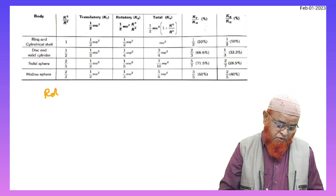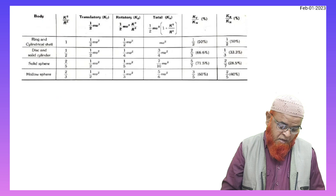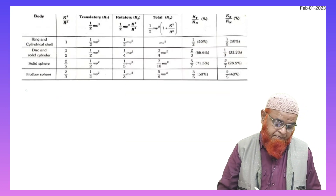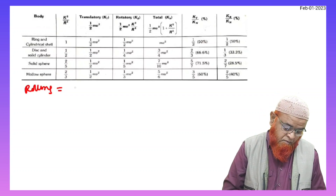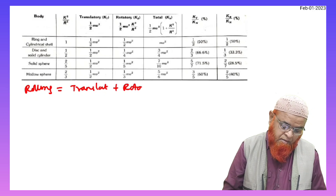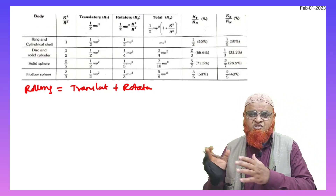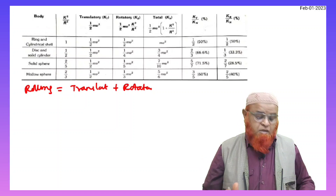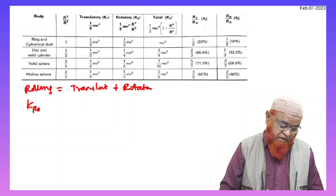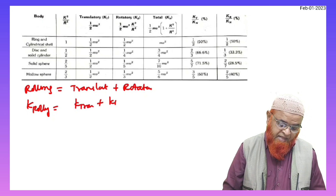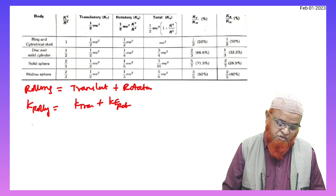You all should know that rolling — what is the meaning of rolling here? Rolling is equal to translation plus rotation. So now, what is the meaning of rolling body here? The kinetic energy of a rolling body is equal to kinetic energy of translation plus kinetic energy of rotation.